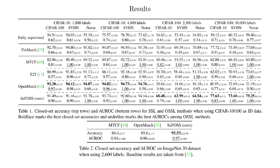Here we compare with the SSL baseline FixedMatch and existing methods for OSSL. Top rows show closed-set accuracy and bottom rows show AUROC for OOD detection. We see that CFOS displays strong results for both closed-set accuracy and OOD detection across all evaluated problems. OpenMatch performs slightly better when CIFAR-10 is ID; however, OpenMatch shows significant performance drops in other scenarios. Worth noting is also that the best performing method when looking at closed-set accuracy only is the SSL baseline FixedMatch.